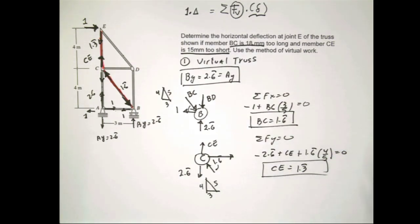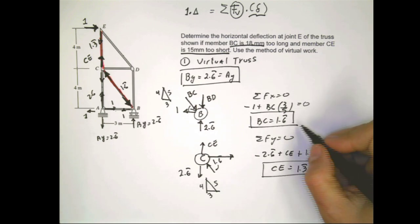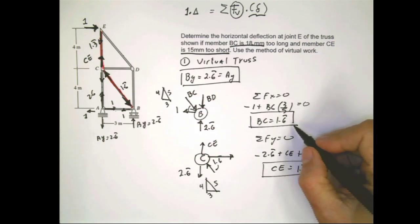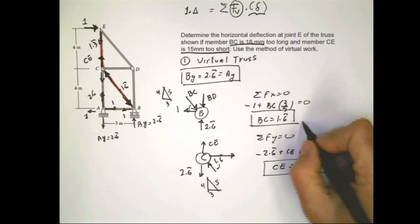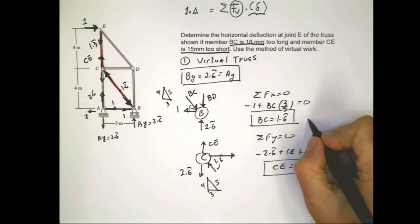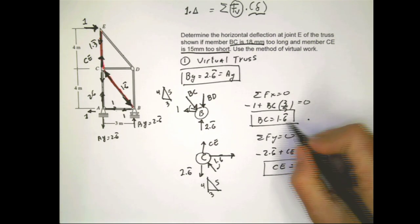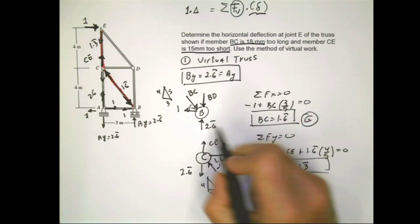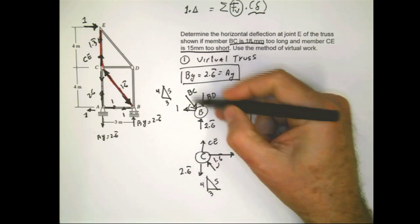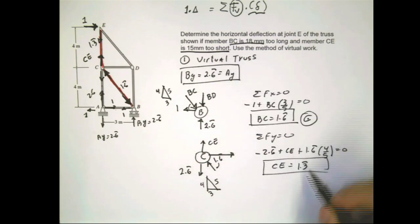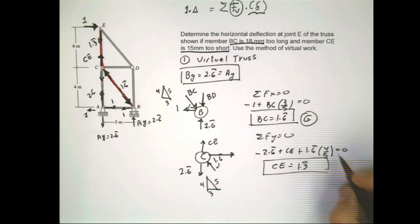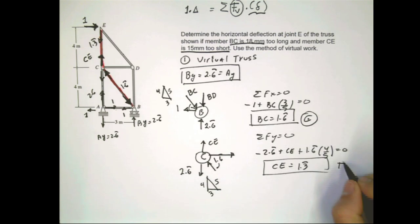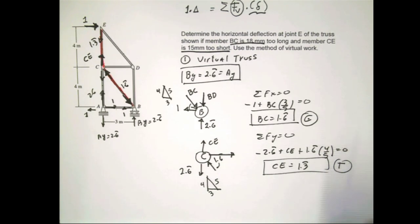This force BC of 1.6 is in compression, so it's negative. And CE of 1.3 is in tension, so it's positive. Those are the only values we need.